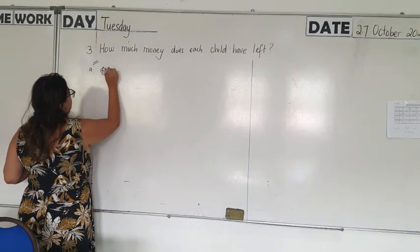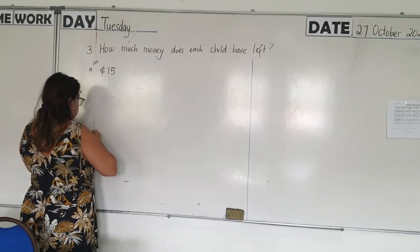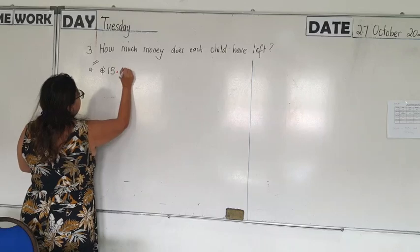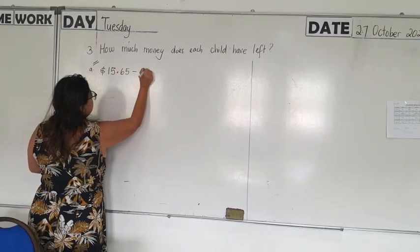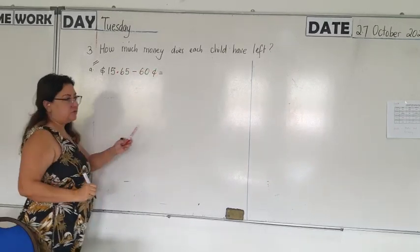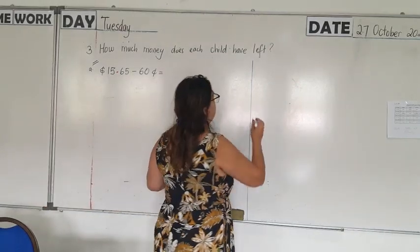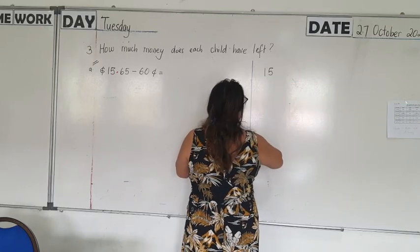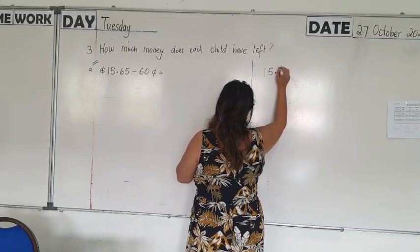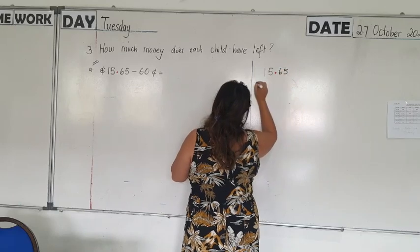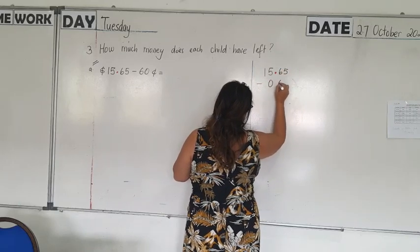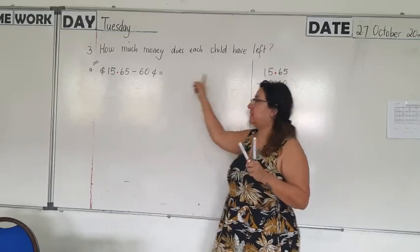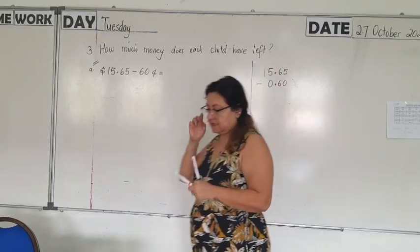You might need to squeeze this a little bit. $15.65 minus $0.60. Please do the working. $15.65 minus $0.60. Now you can see $0.60 is written as 0.60.